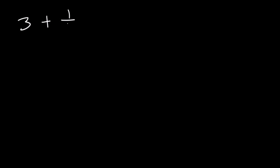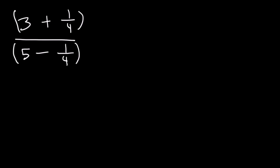Now how can we simplify this complex fraction? 3 plus 1/4 divided by 5 minus 1/4. Whenever you have a complex rational expression, what you want to do is clear away the fractions within the larger fraction. You can do that by multiplying by the denominator of the smaller fractions, which in this case is 4.